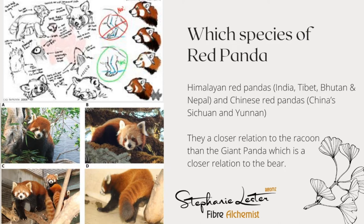I'm not even going to try and pronounce the areas of China — you can see them written there. But you can see here on the left the cosmetic differences between them. The top drawing, which I think is fantastic, shows you the different faces. The top two are the Chinese Red Panda and the bottom two are the Himalayan. The Chinese Red Panda have got much darker colouring on their face, and the male has quite dark black, almost raccoon-esque colouring around the eyes.